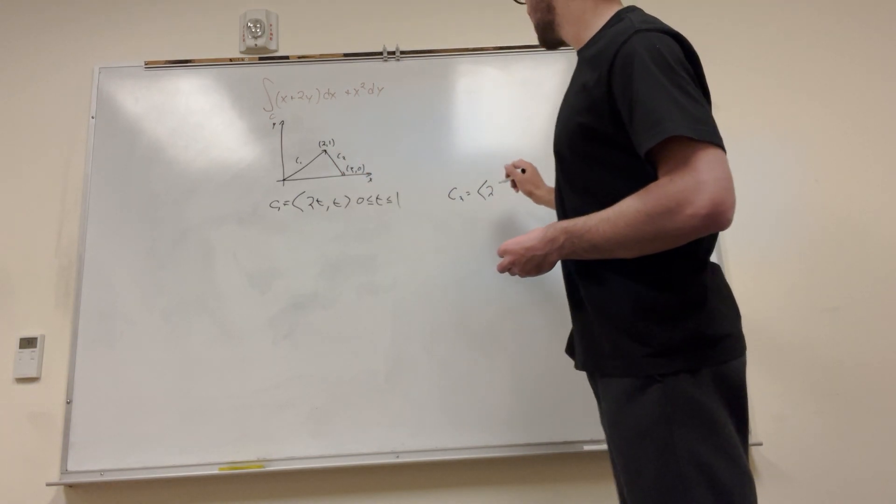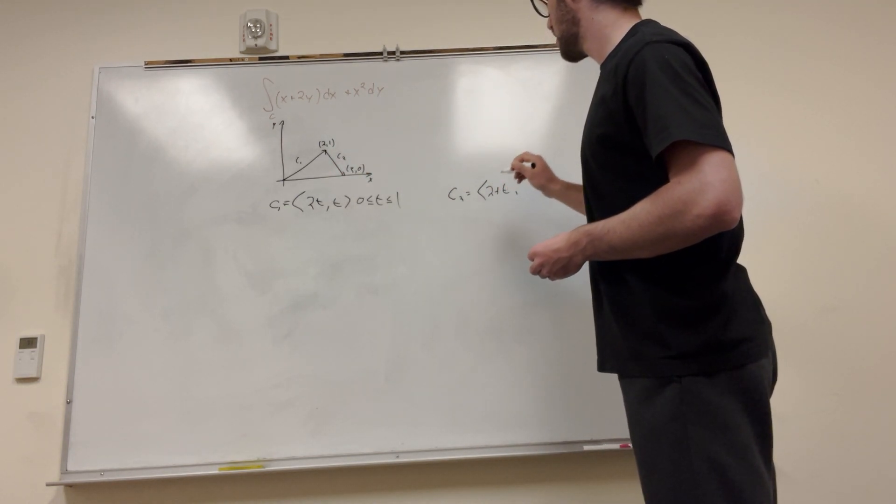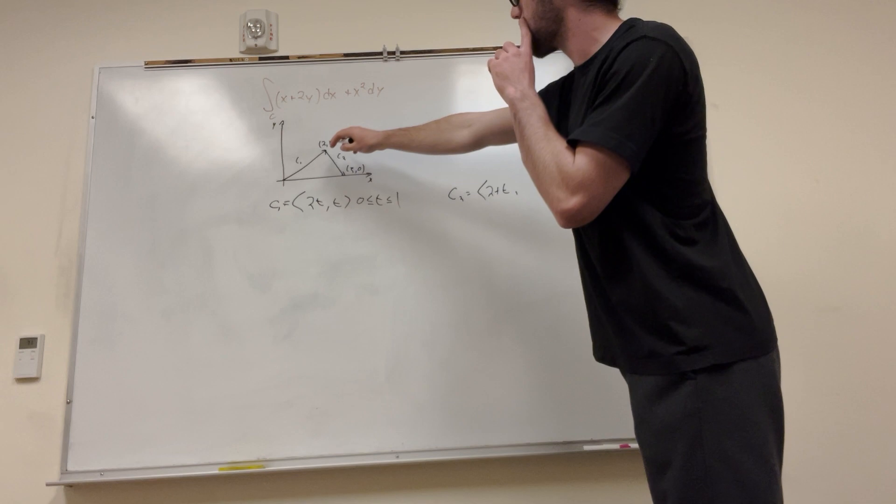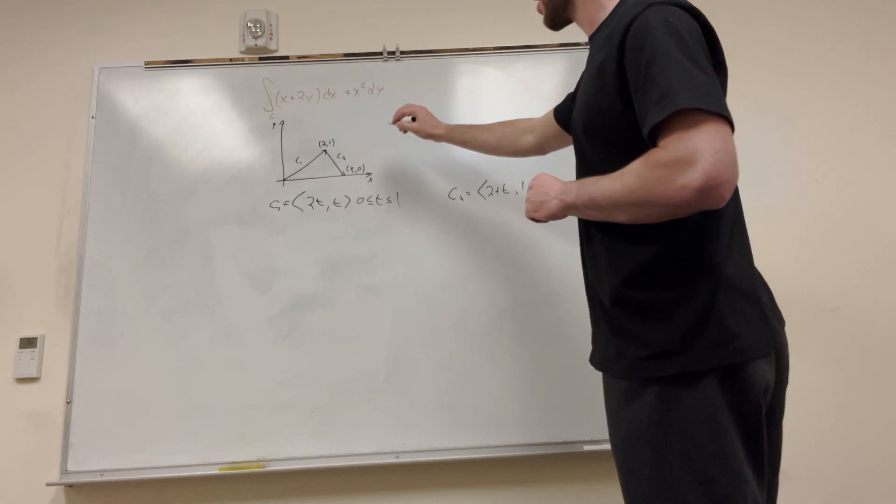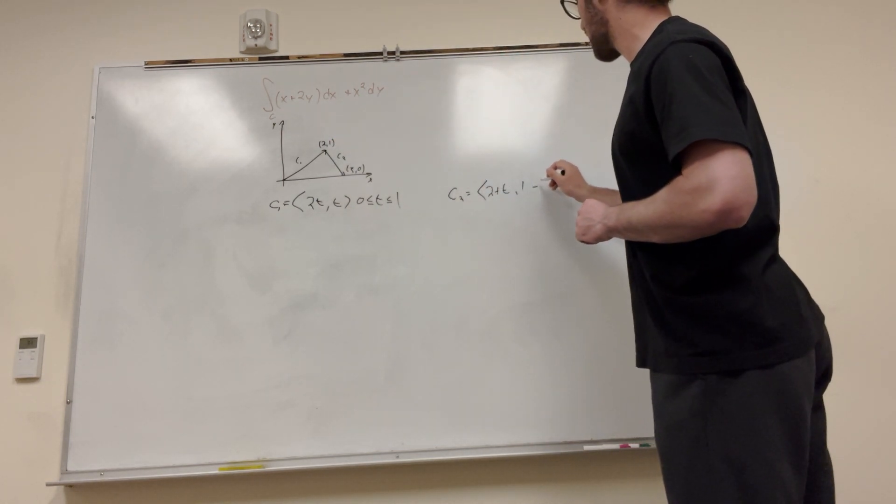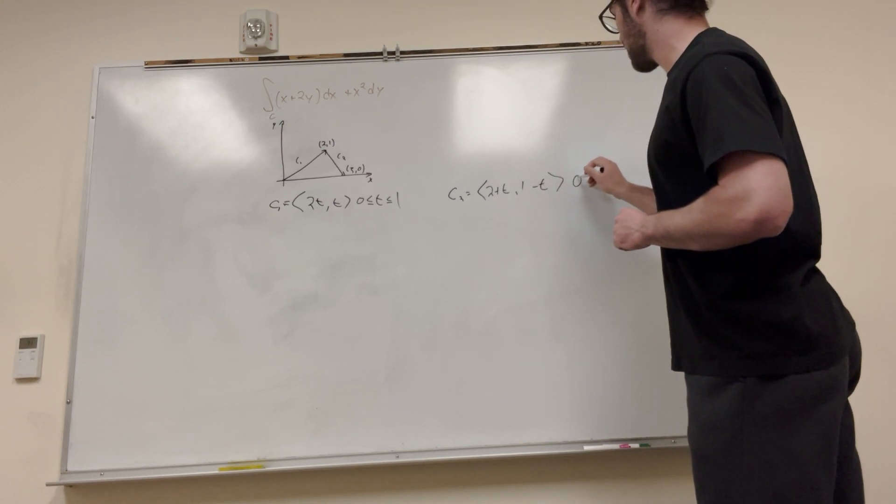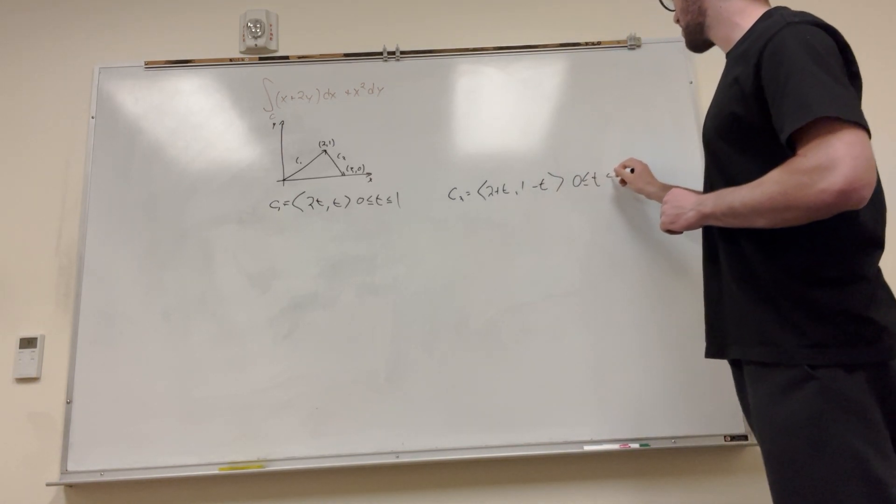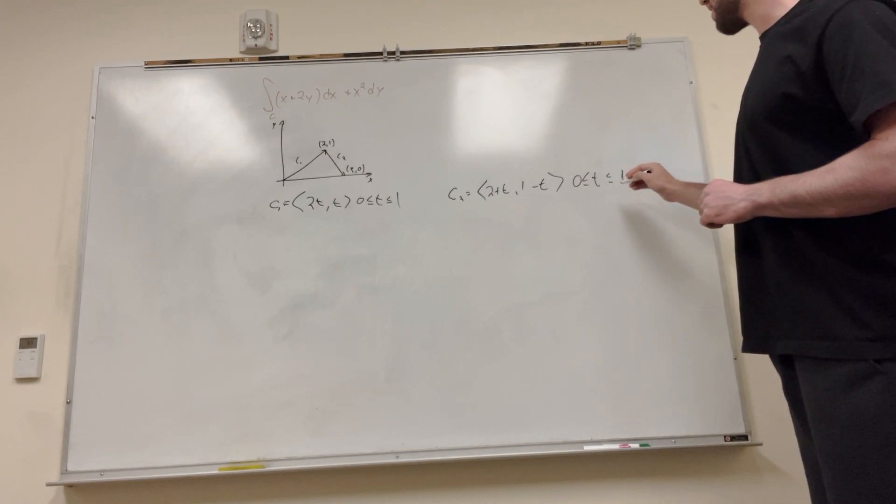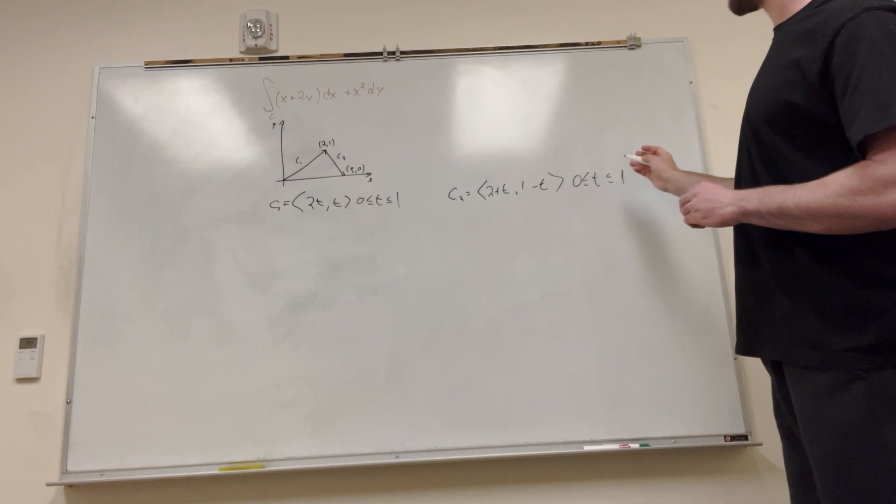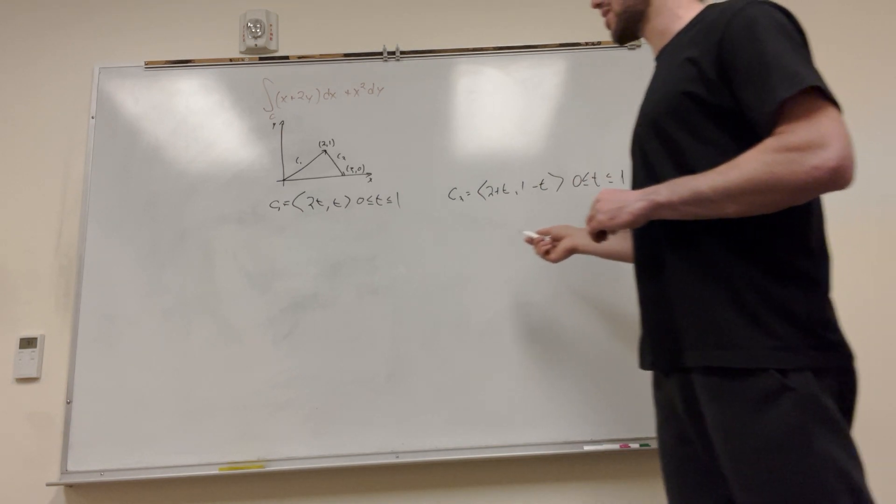So it's going to be 2 + t, and then if we look at y, it starts at 1 and then it goes down 1, so it's going to be 1 - t on the integral from 0 to 1, or on the thing from 0 to 1. And if you plug in basically t equals 0, t equals 1, it will give you your starting point and your end point. So we know that this is good.